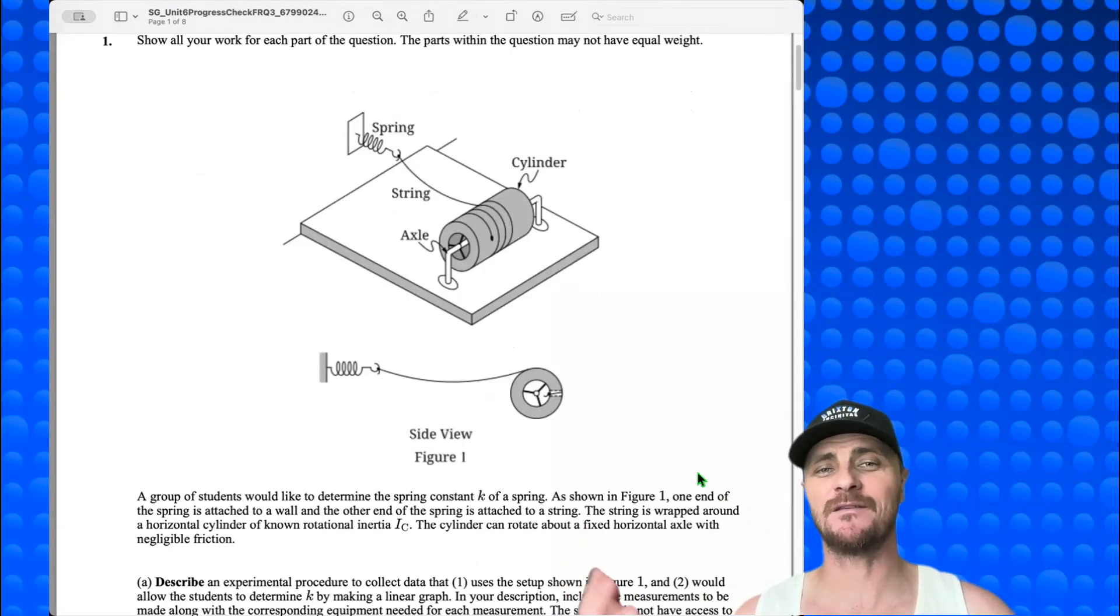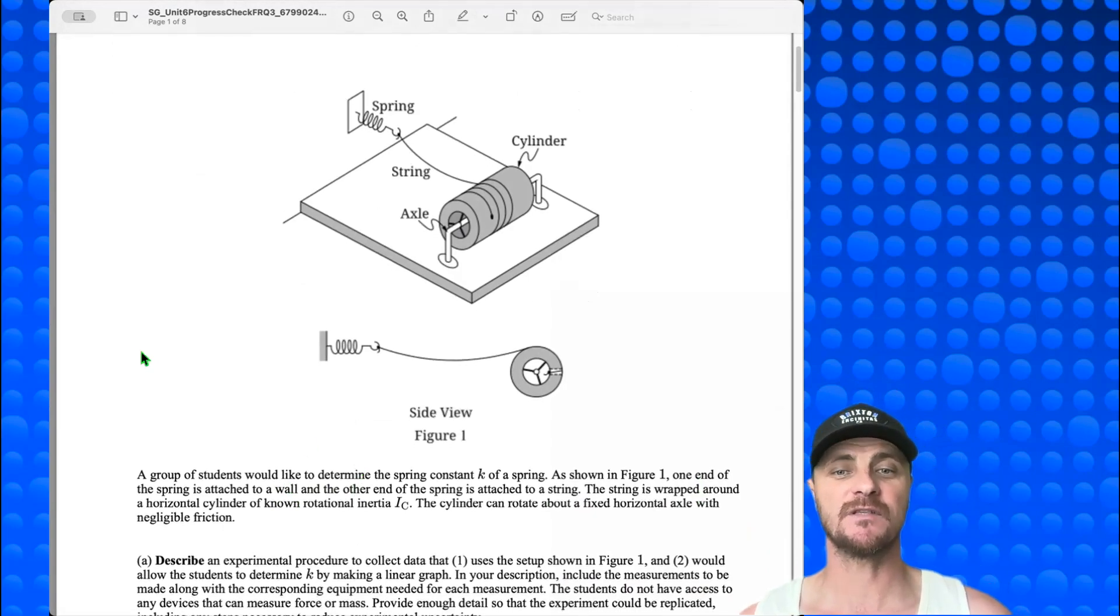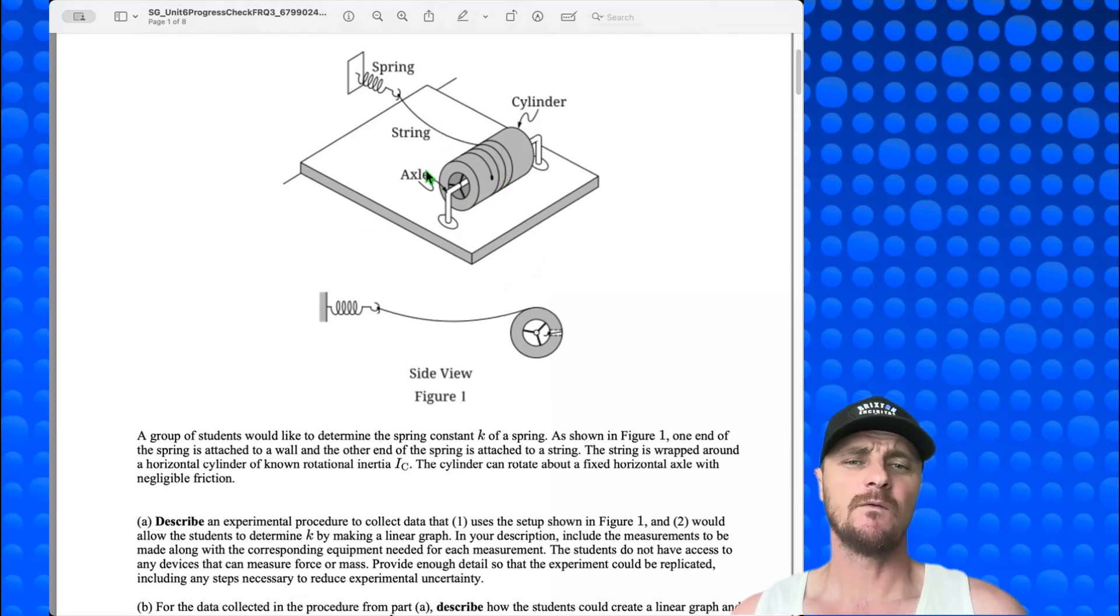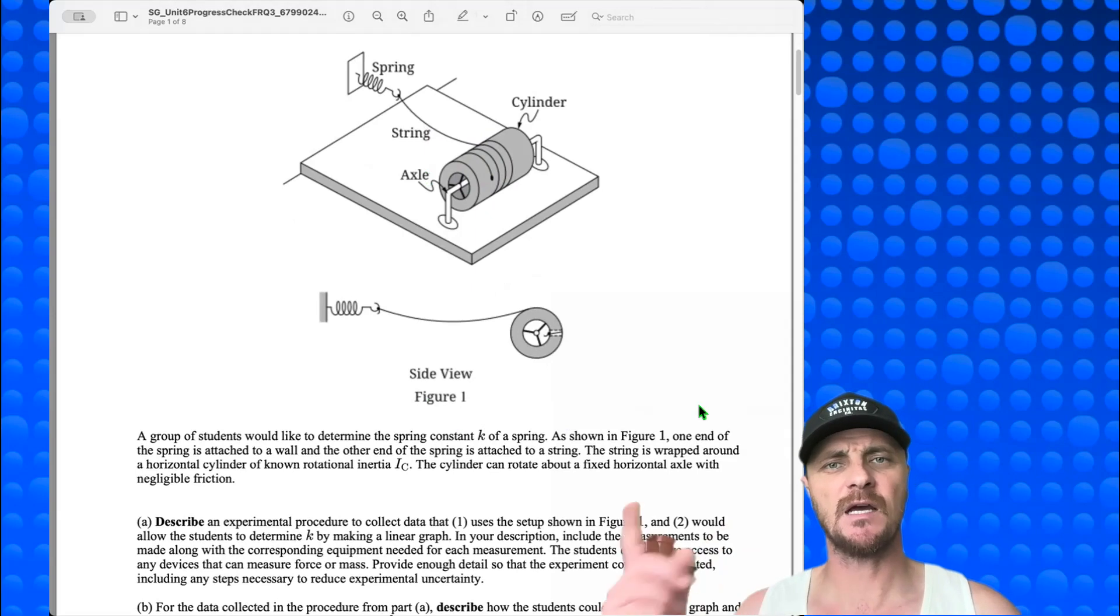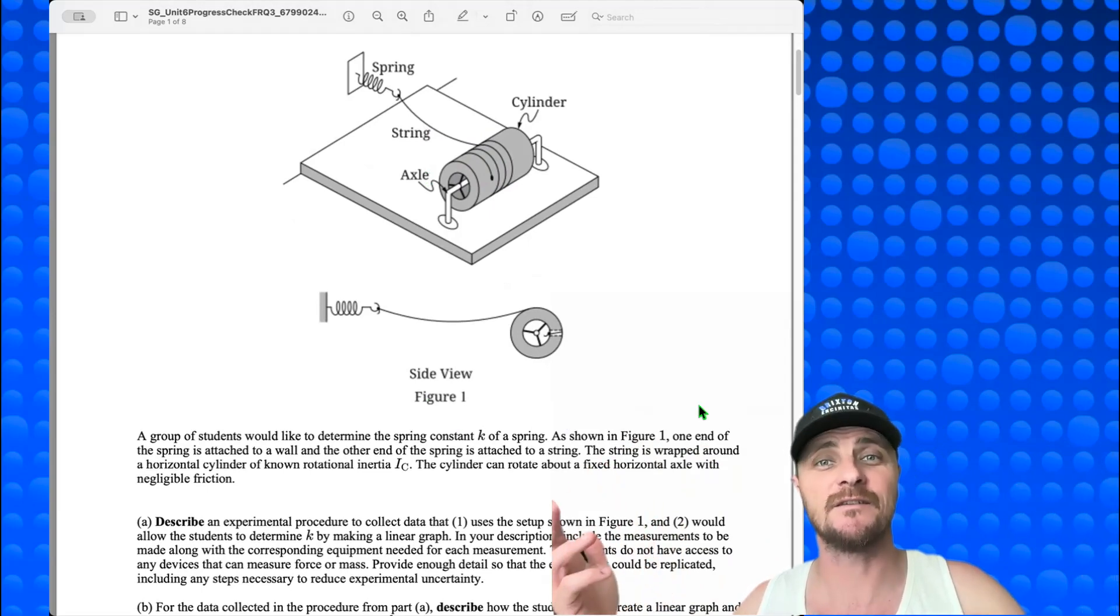So we've got our system, and right away you can see this is not an everyday system. It's a device created solely to torture you as an AP Physics 1 student. So we have a group of students who would like to determine the spring constant k of a spring, as shown in figure 1. One end of the spring is attached to a wall, and the other end of the spring is attached to a string. The string is wrapped around the horizontal cylinder of known rotational inertia I sub c. The cylinder can rotate about a fixed horizontal axle with negligible friction.